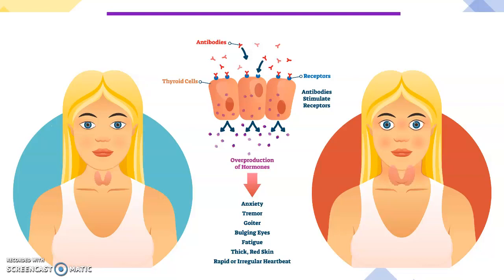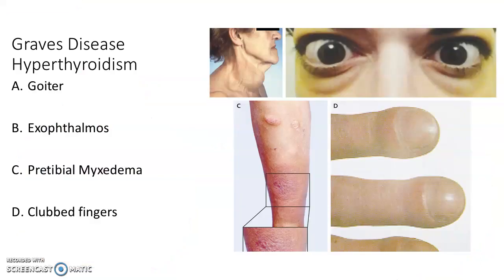In the blood, TSH will look low but that doesn't matter because there is a constant influx of these antibodies. So in Graves' disease you'll have low TSH, low TRH, and increased T3 and T4. One unique hallmark sign of Graves' disease is exophthalmos — bulging eyes — because fat tissue in and around the eyes accumulates fluid, causing the eyes to protrude. In the lateral view you can see the goiter, the enlarged thyroid gland.